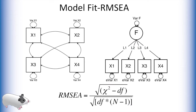Finally, we have the RMSEA value. The RMSEA value is calculated using the chi-square difference between our factor model and the saturated model, where n is the number of observations in our dataset. The lower the chi-square value is relative to the degrees of freedom multiplied by n, the lower the value of the RMSEA. However, as the chi-square value approaches the degrees of freedom times n, RMSEA gets closer to 1. For RMSEA, we want lower values. In practice, researchers tend to consider RMSEA values below 0.05 to be indicative of good fit.